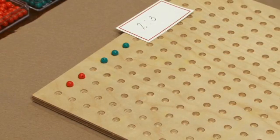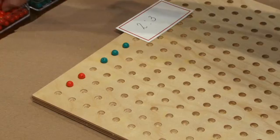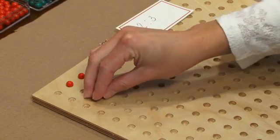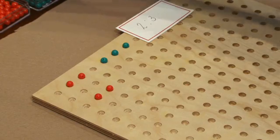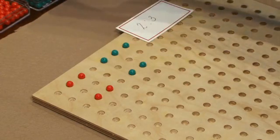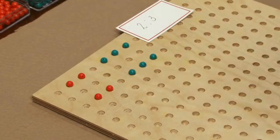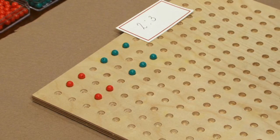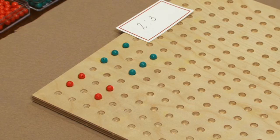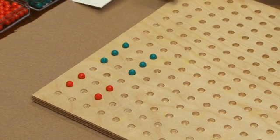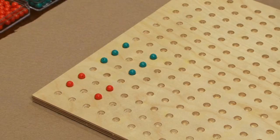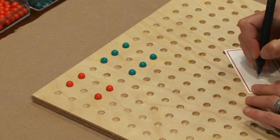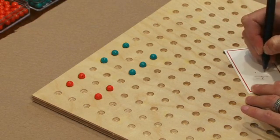Now we're going to do something new. We're going to add a row using the same ratio. So we have two more red pegs and three more green pegs. And I would have the students write the new ratio. So now we have four to six.